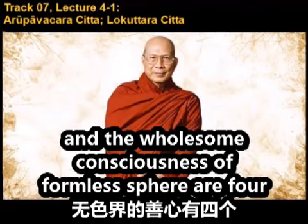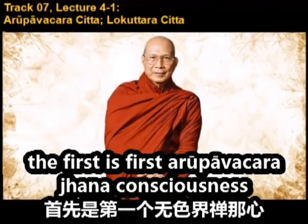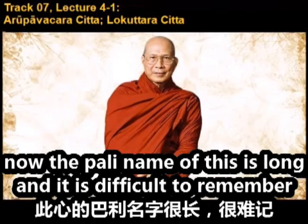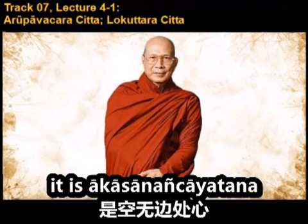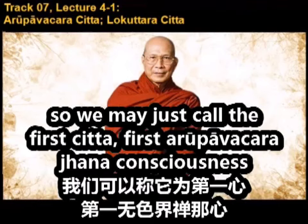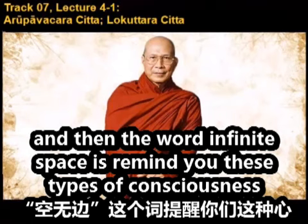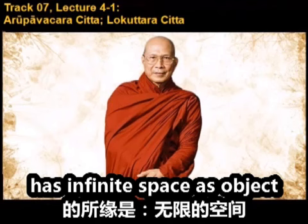The wholesome consciousness of the formless sphere are four. The first is the first arūpāvacara jhāna consciousness. The Pali name is long and difficult to remember — it is ākāsānañcāyatana. We may just call it the first arūpāvacara jhāna consciousness. The word 'infinite space' reminds us that this type of consciousness has infinite space as its object.